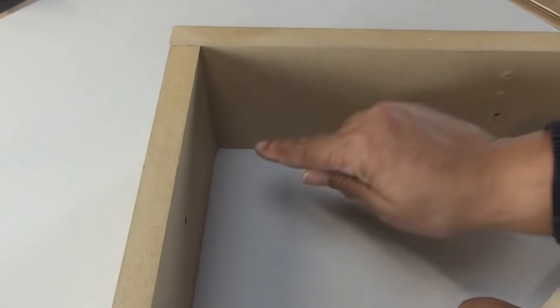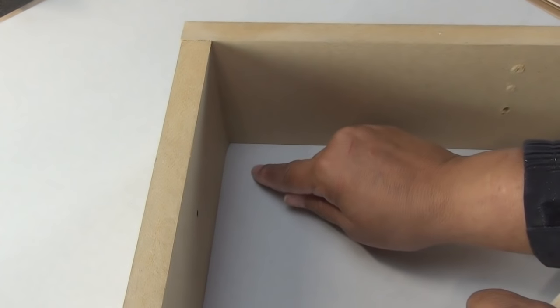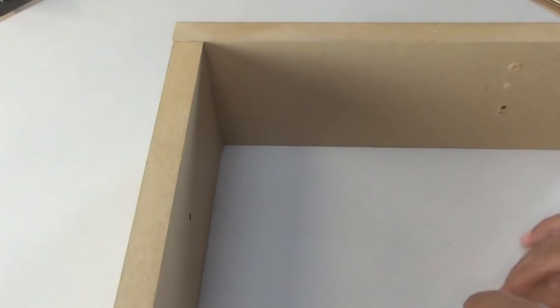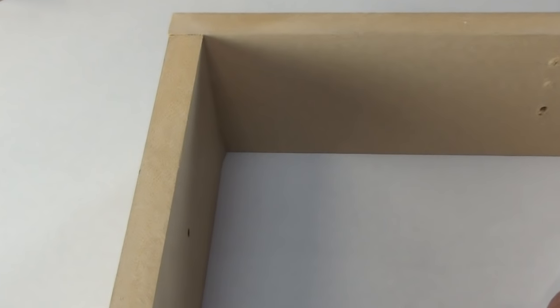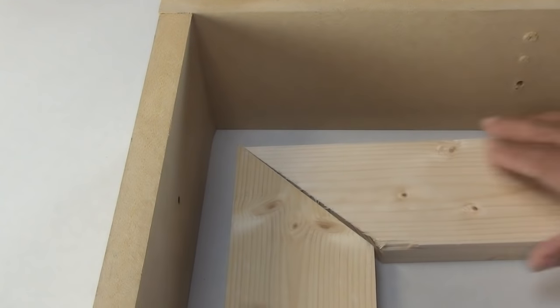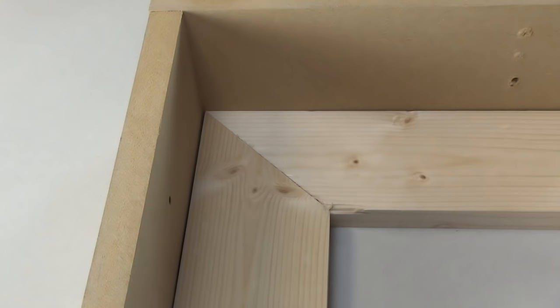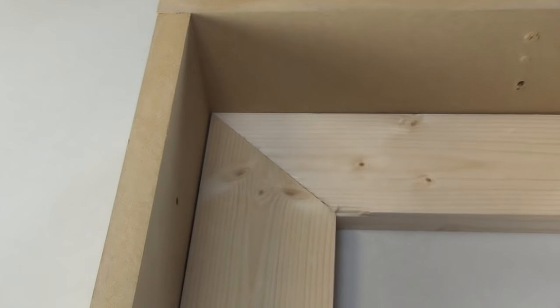So when you have to cut chair rail or baseboard or quarter or half round, you just cut it at 45. You bisect that 90 degree angle, and you make your cut at 45 degrees, and everything is perfect.